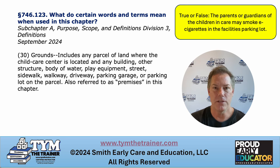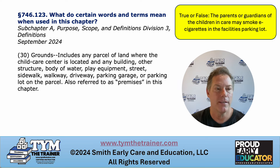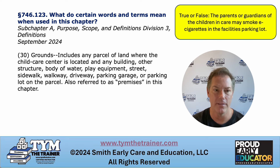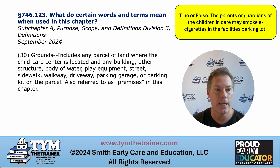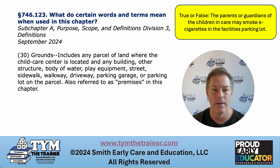The first changes in the Child Care Minimum Standards for 2024 apply to terms and definitions. Number 30 addresses grounds — they've put a bigger focus on what is considered grounds and premises. Grounds are any land located at the child care center, including the building, other structures, body of water, play equipment, streets, sidewalks, walkways, driveways, parking garages, etc. — also known as premises.